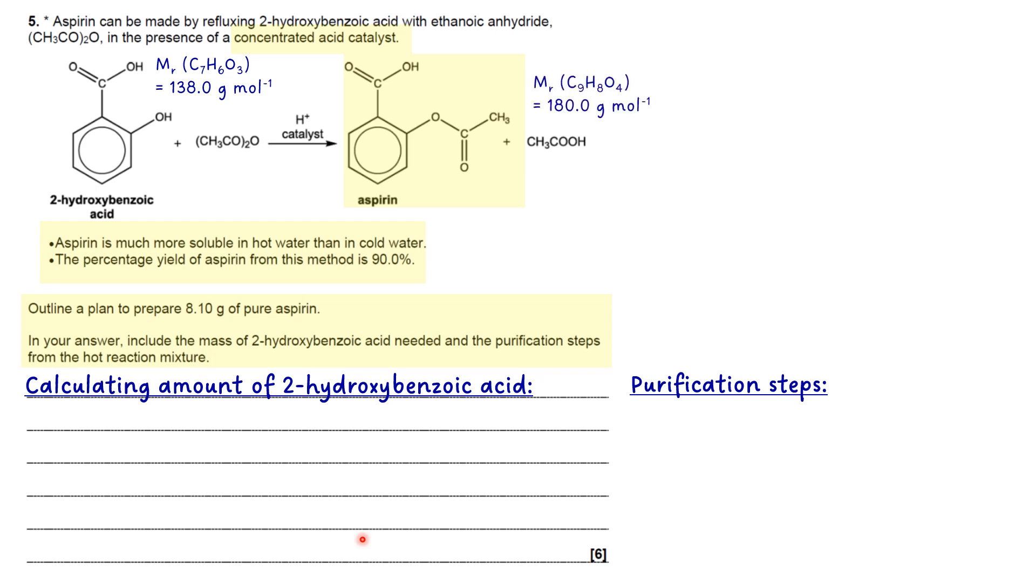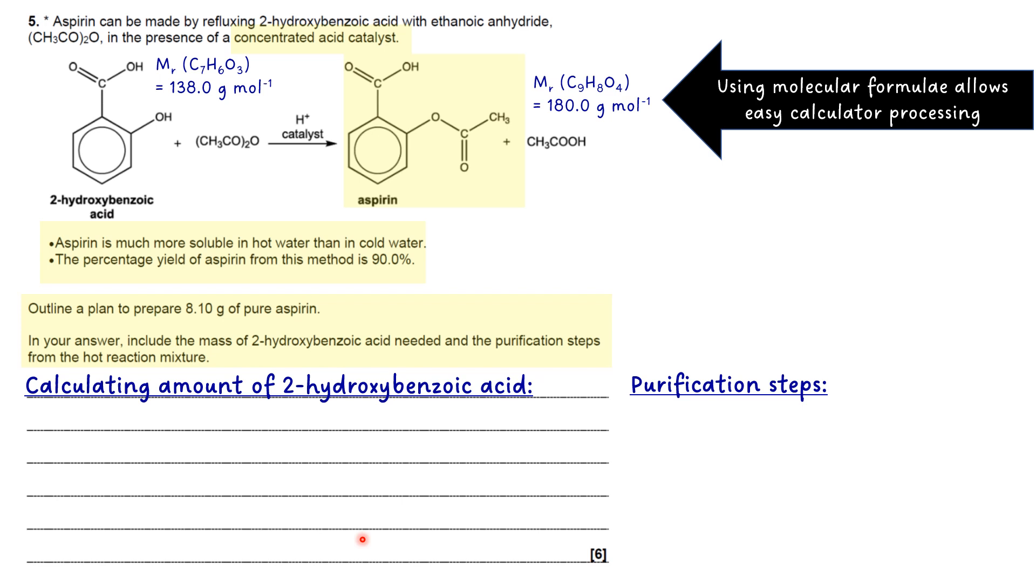You'll see that what I've done at the top is I've worked out the MR for each of my two compounds. If I take the structures and change them into molecular formulae, that allows me to process the MR and work it out really easily. Let me show you why. If you take 9 carbons, that's 9 times 12, 8 times 1 is 8 hydrogens, 4 times 16 is 4 oxygens. 7 times 12 is 7 carbons over on the left here, plus 6, plus 3 times 16. You can put those into a calculator and you can see how it would end up as 138 grams per mole and 180 grams per mole. So molecular formulae are quite useful even if they're not asked for, they're quite useful for working out MR.